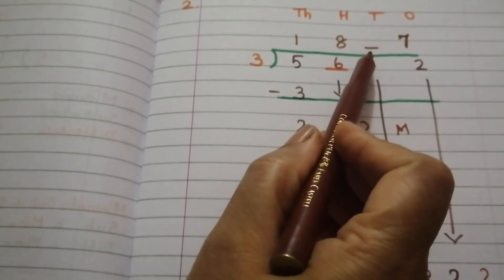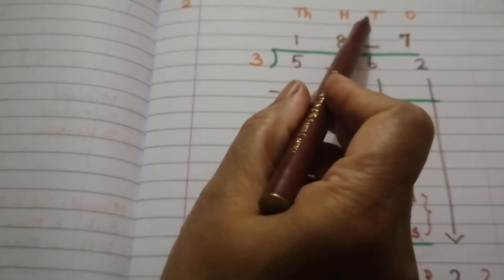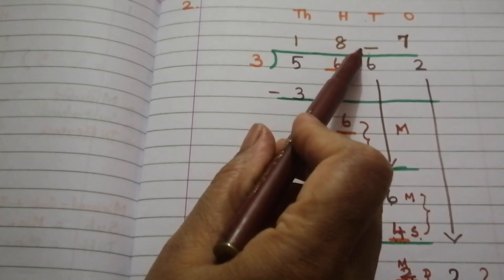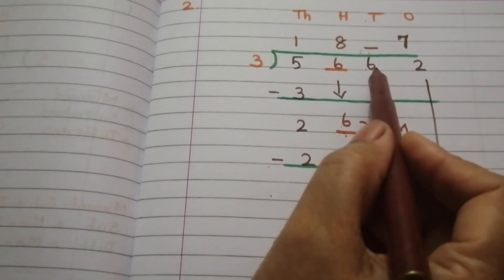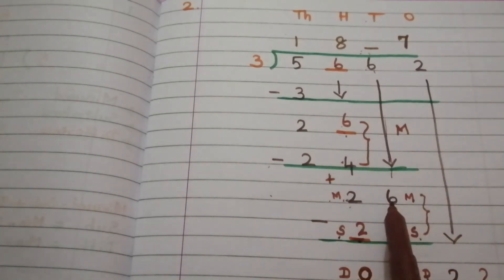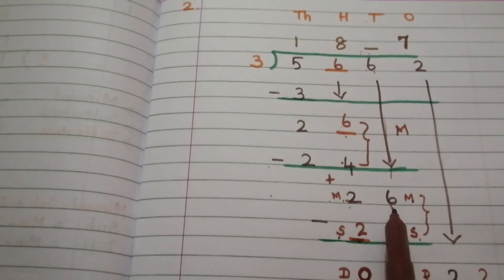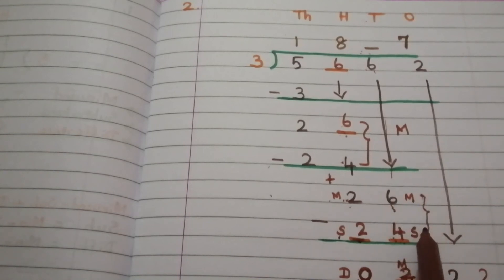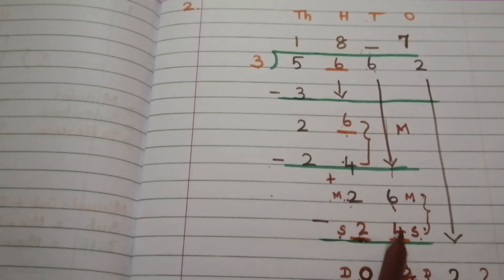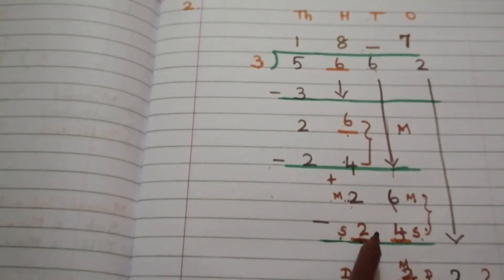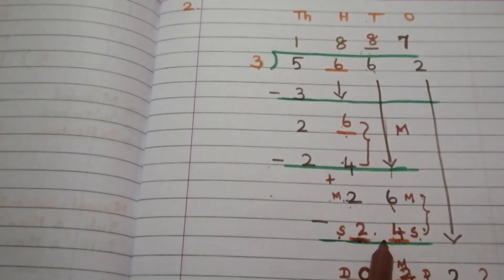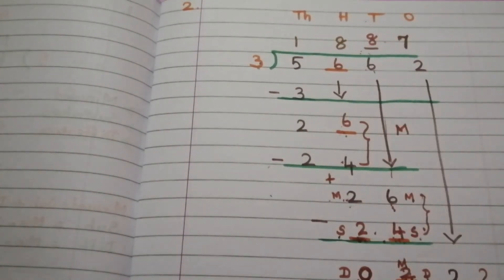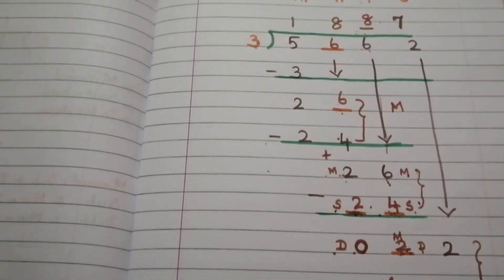Now we have to find the quotient digit in the tens place. This quotient digit is above the digit 6, so we look at this subtraction portion. How do we write 24? 3 eights are 24, so 3 eights are 24, and our quotient digit is 8 here. Now we have found out all the digits.